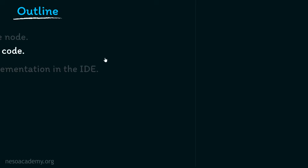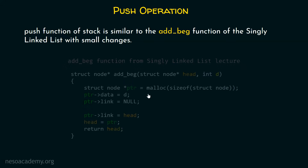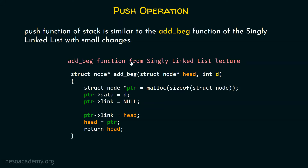The push function of a stack is similar to the add_back function of the singly linked list — it adds a new node at the beginning of the linked list. If you have seen the previous lectures, you may be aware of how to add a new node at the beginning of a singly linked list using the add_back function. The push function is similar to add_back with some small changes. This is how our add_back function looks; I took this from the singly linked list lecture. We will create a push function that acts similarly but with some minute changes.